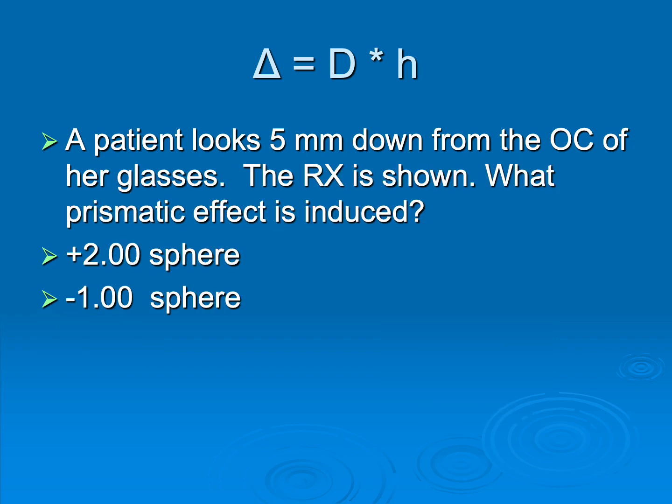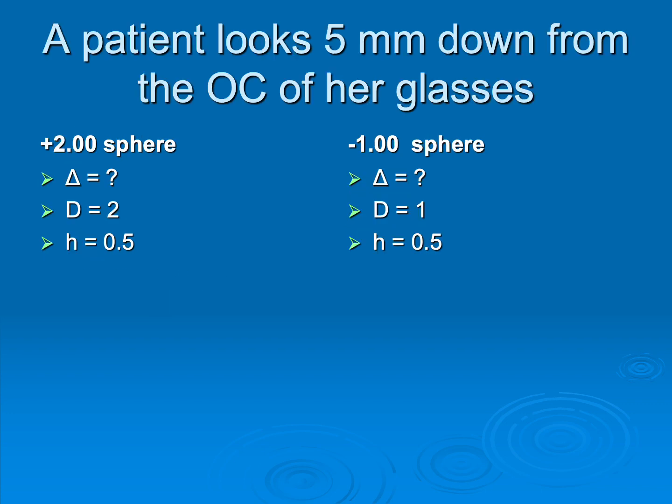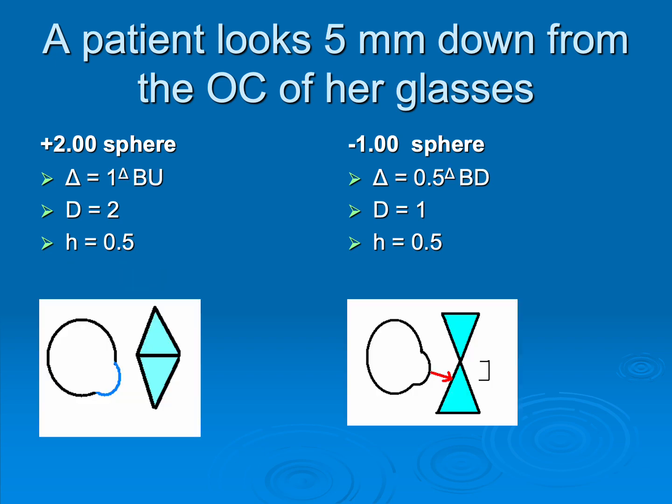Almost no one wears monocles anymore. So more likely you'll see a question like this. Patient's looking some distance down from the optical center of her glasses. And then they're going to give you a prescription. What is the prismatic effect? Here's the key: work the two eyes separately, and then we're going to put them together at the end. So one eye was a plus two sphere. The other eye was a minus one sphere. Fortunately, they have to look down at the same distances. And so you can see here that we're getting one prism diopter over the right eye, 0.5 over the left. It's a plus lens on the right, so it's base up, and a minus lens on the left, base down.